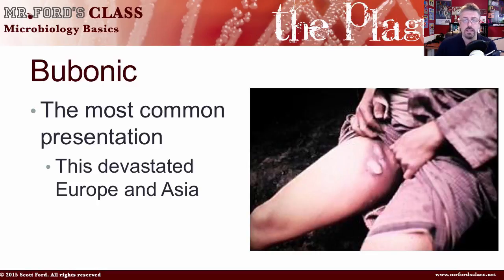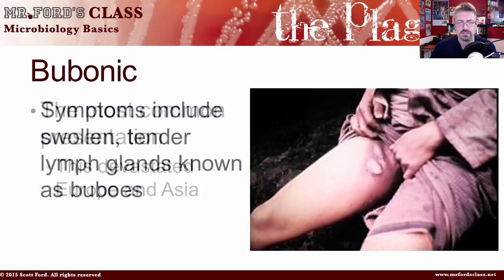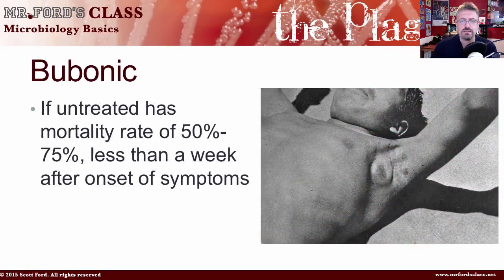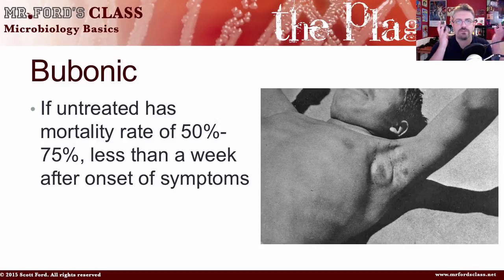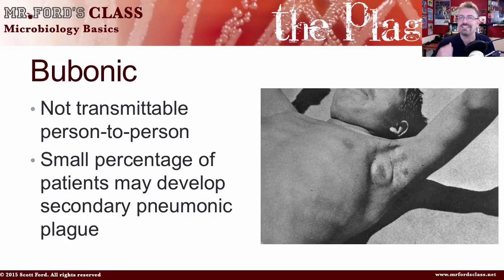The bubonic plague is the most common presentation and, ironically, is probably the better of the three to get — not that you'd want any of them. This is the one that devastated Europe and Asia. Symptoms include swollen, tender lymph nodes that create what we call buboes. If untreated, it has a mortality rate of 50% to 75%. However, the other forms have close to 100% fatality, so comparatively, this one is the least severe. It is not transmittable from person to person.